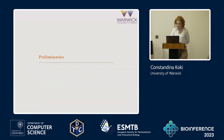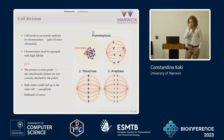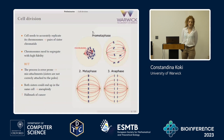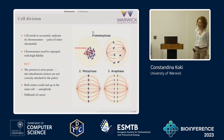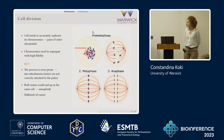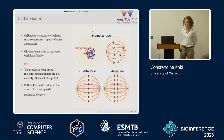Some preliminaries about cell division. We all come from a single cell, and by the time we are adults we have around 30 trillion cells, and this happens of course with cell division. Cell division consists of various phases: prometaphase, metaphase, anaphase, and the last one is telophase.